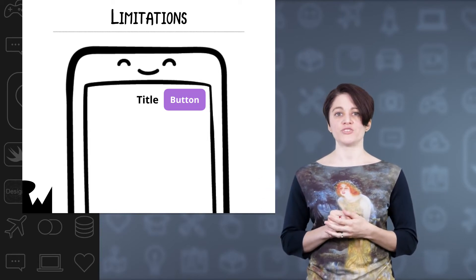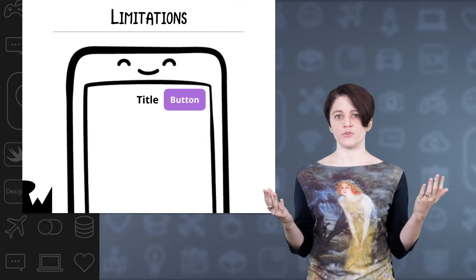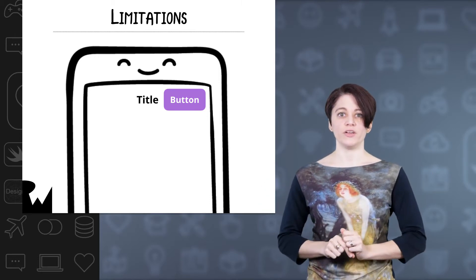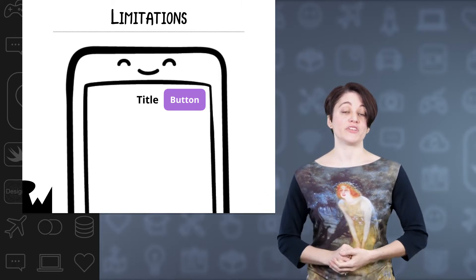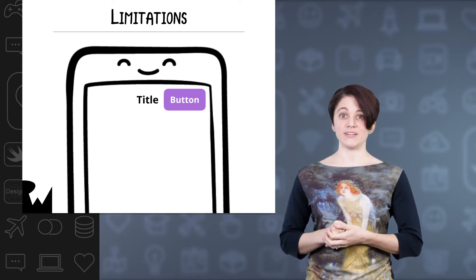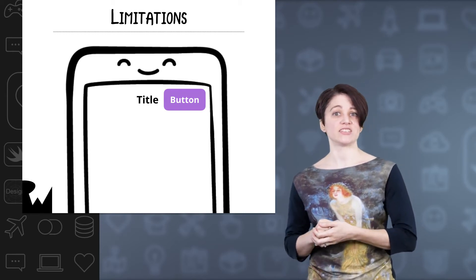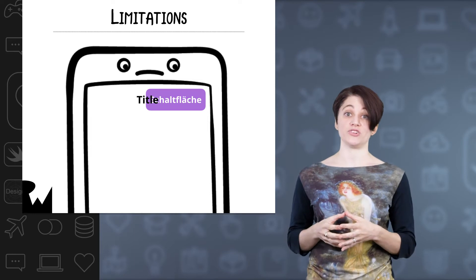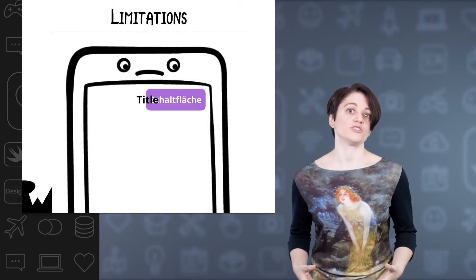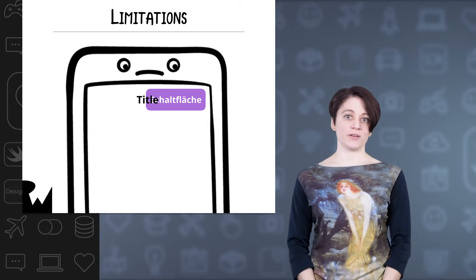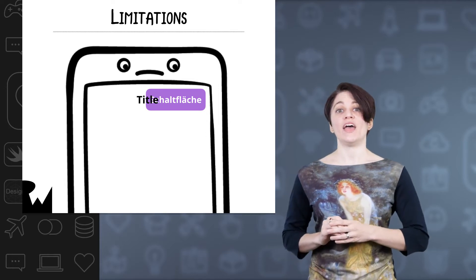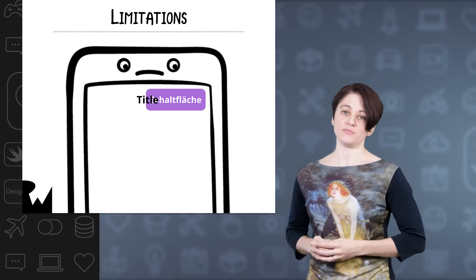But for views that have to interact with other views, you're going to need a little more. For example, here we have a title label that should be centered and a button next to it. But if the button has text that gets a little too long, like with this German translation, the title should move over to prevent overlapping. Auto resizing can't handle this type of scenario, and that's why auto layout was created.